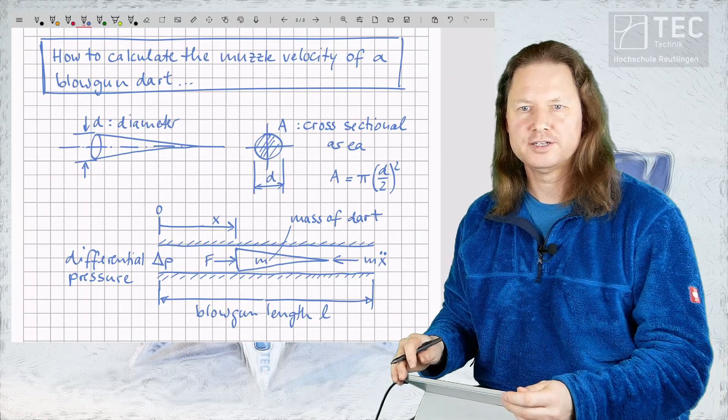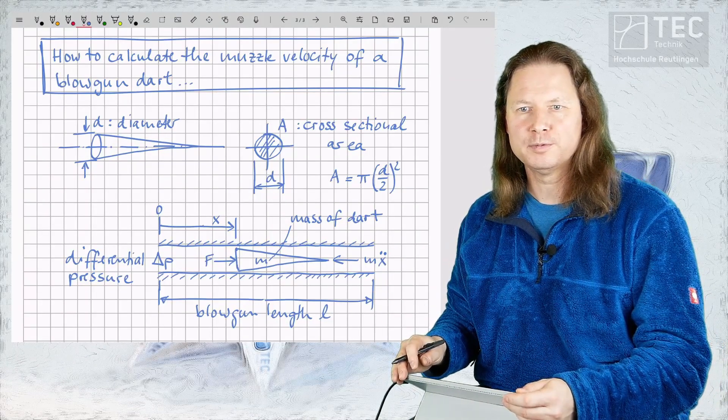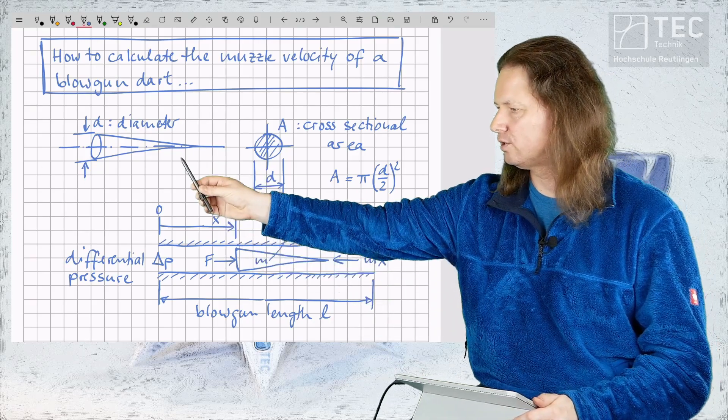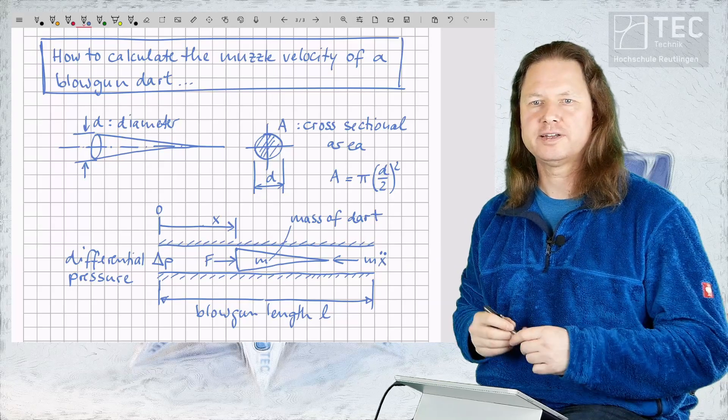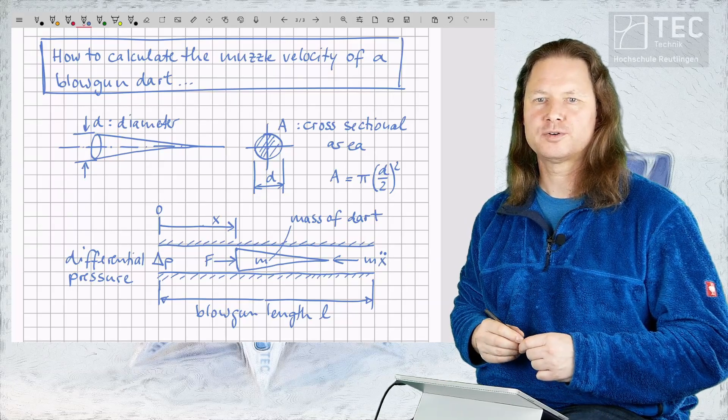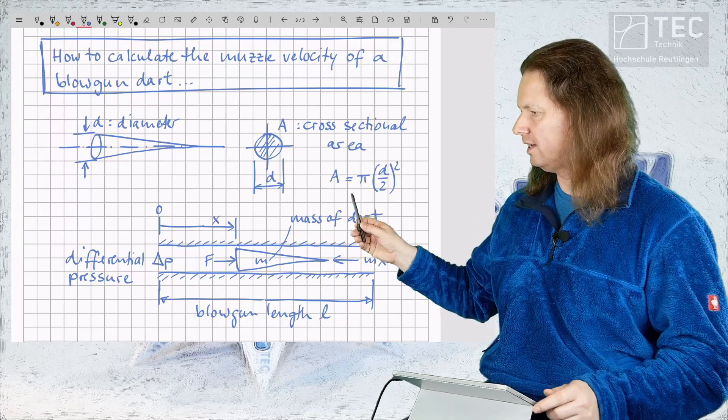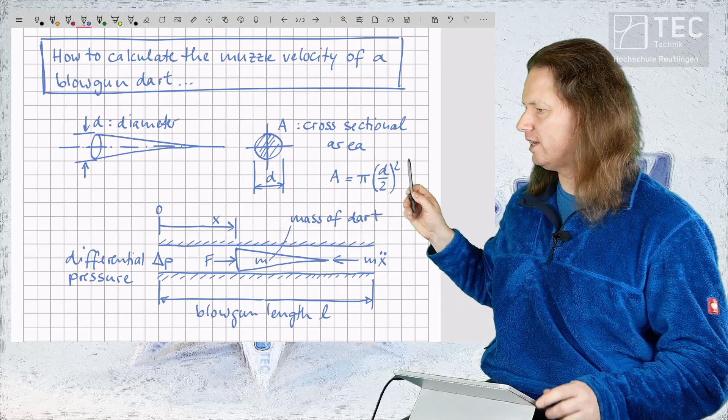Let's begin our calculations with a visualization of the problem. Our blowgun dart has a conical shape with a diameter d. From this diameter we can calculate the cross-sectional area A as pi times one half d squared.